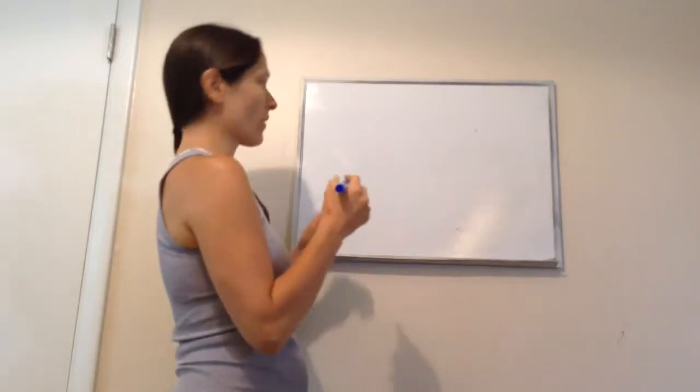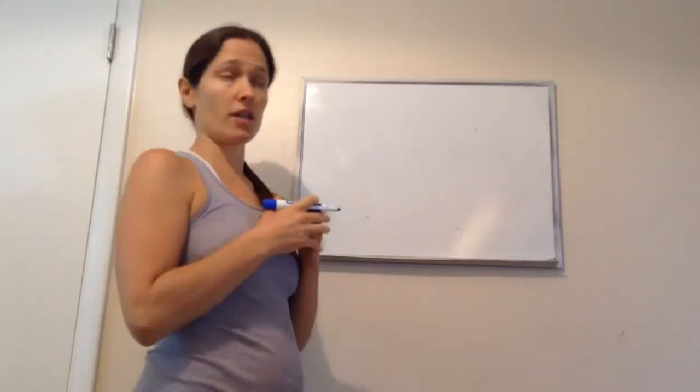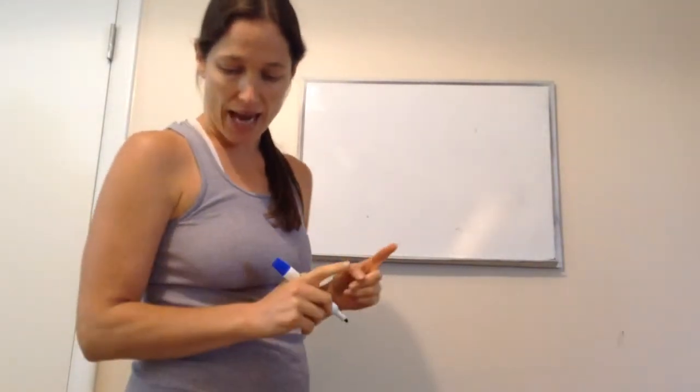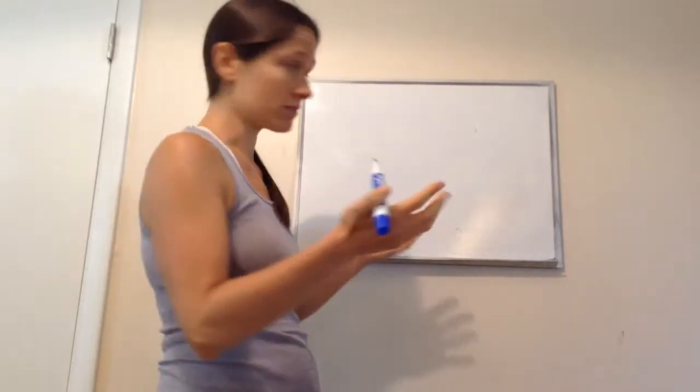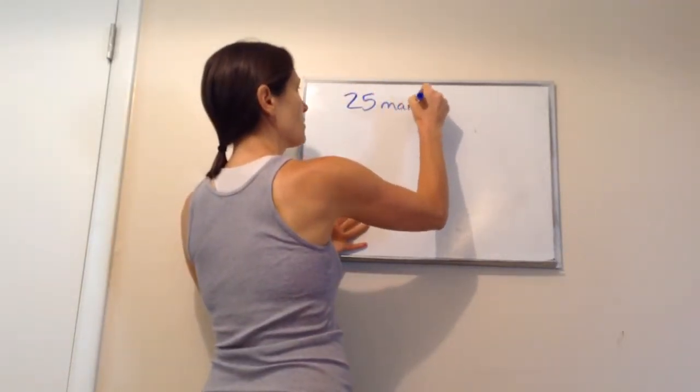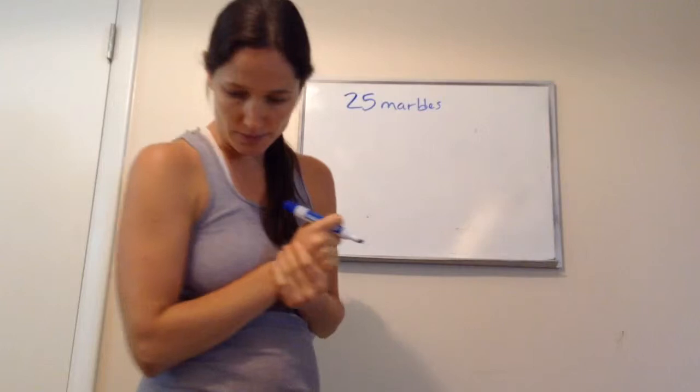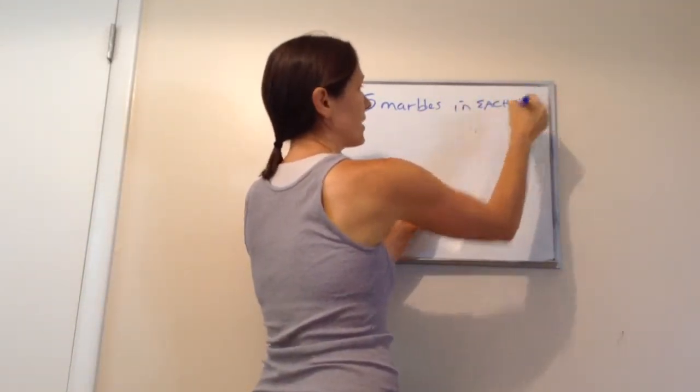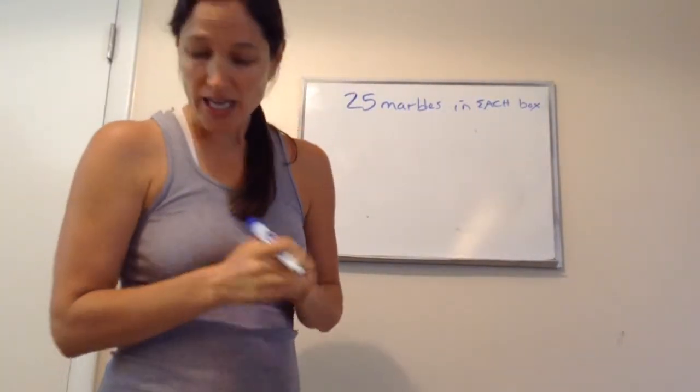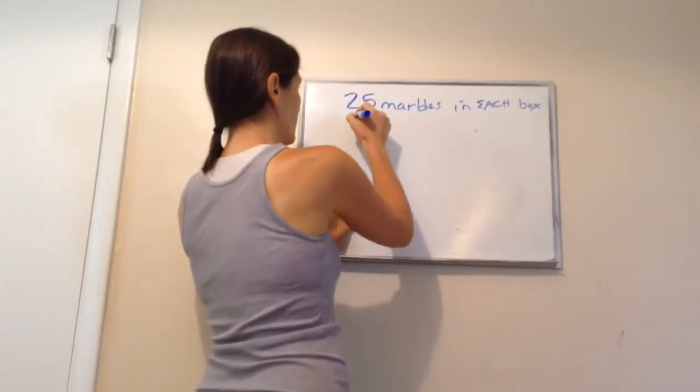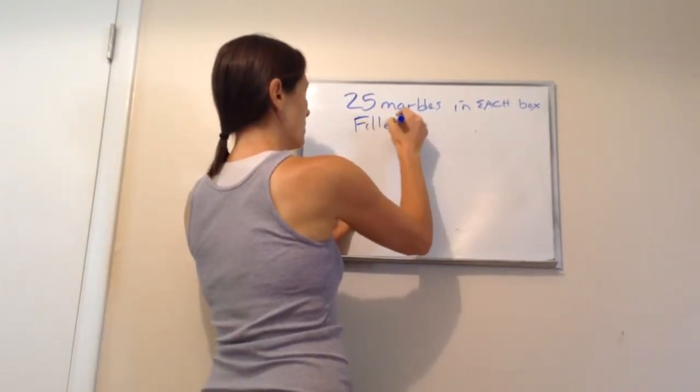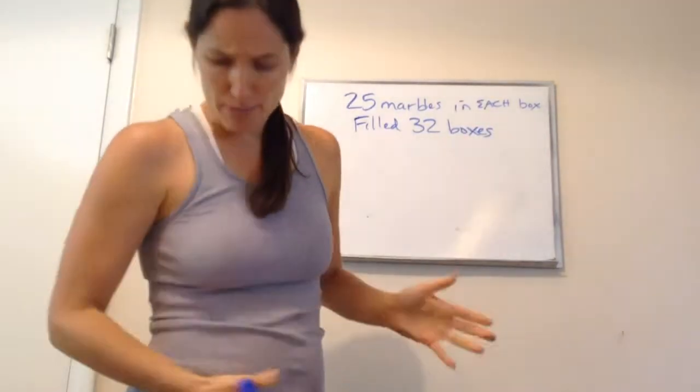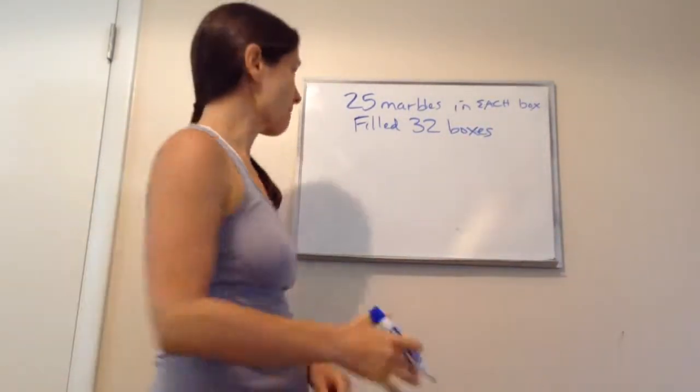For example, help me come up with the important key information. Juanita packed 25 marbles in each box. That's probably important. 25 marbles in each box. I'm going to write that down. In each. That's going to become important in just a minute. Each box. Then it says this. If she filled 32 boxes, filled 32 boxes, how many marbles did she pack in all?